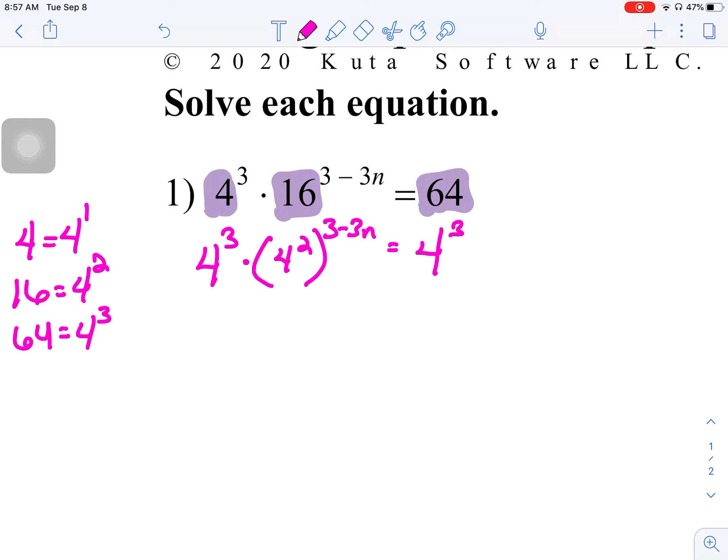All right, now, everything from here is all about exponent properties. So, 4 to the third times, now, we've got a power with another power, we're going to multiply these two together, so that's going to be 4 to the 6 minus 6n equals 4 to the third.